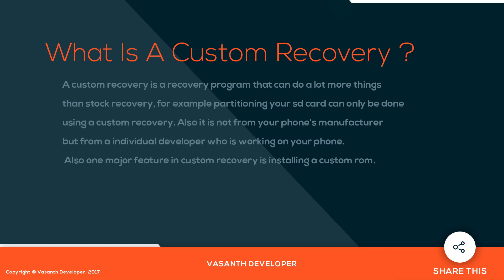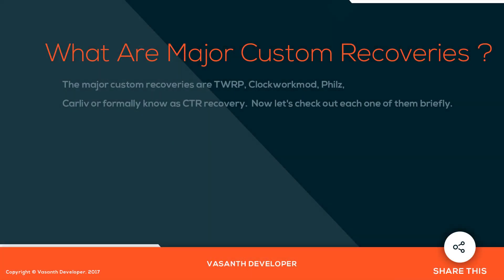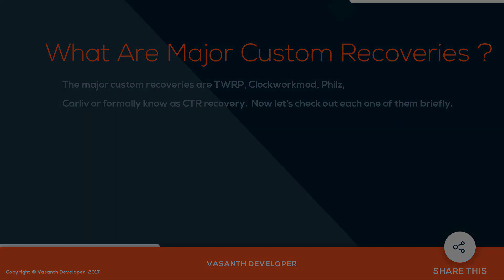One major feature of custom recovery is installing custom ROMs. The major custom recoveries are TWRP, Clockworkmod, Philz, and Carliv — formerly known as CTR Recovery. Now let's check out each one of them briefly.